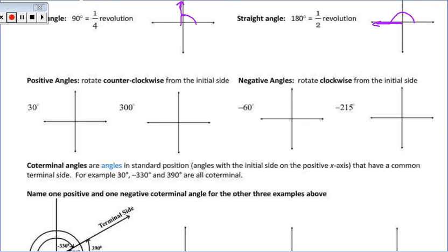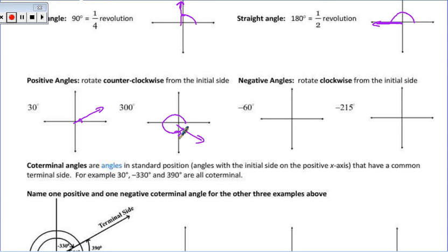A 30-degree angle here — you just need to kind of estimate. A 30-degree angle would look something like that, and you do want to show the rotation. For 300 degrees, I start rotating: that gets me to 180, then 270, then 330 — it would be sitting right about there, and I'm showing the rotation as well.